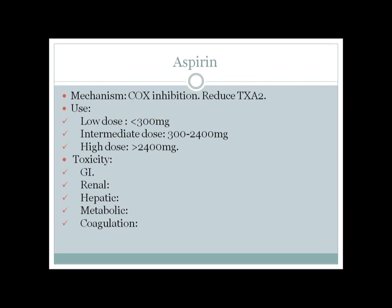Aspirin, also known as salicylic acid or salicylate, can cause metabolic acidosis at high doses. It also stimulates the respiratory center, causing hyperventilation and loss of CO2, leading to respiratory alkalosis. However, at very high doses, aspirin depresses the respiratory center, causing CO2 buildup and respiratory acidosis. So remember: aspirin causes metabolic acidosis, then respiratory alkalosis, and ultimately respiratory acidosis at higher doses.